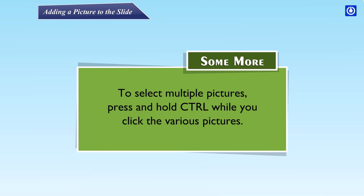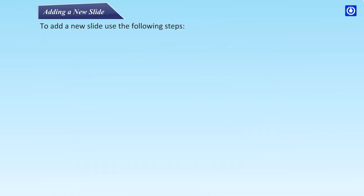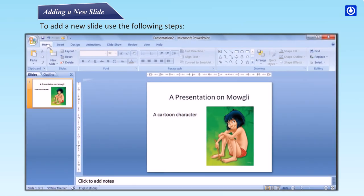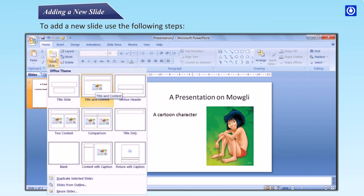To select multiple pictures, press and hold Ctrl when you click the various pictures. Adding a new slide: To add a new slide, use the following steps. Step 1 – Click on the Home tab. Step 2 – In the Slides group, click the New Slide down arrow button.